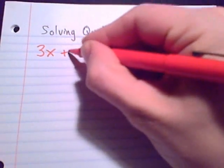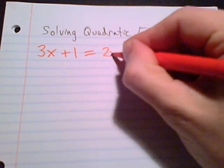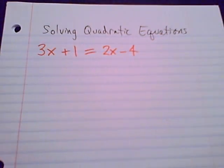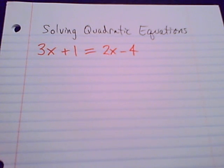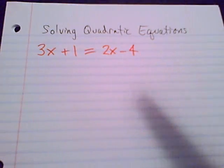Here's an example: 3x plus 1 equals 2x minus 4. What we want to notice about this equation is that we have the one variable X. True, it shows up in two places, but we only have just one type of variable, the X, and there are no exponents on the X.